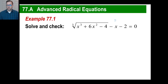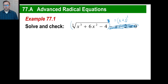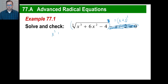Same thing — we're going to rewrite this. The term goes to the right side, so it turns into x plus 2. To get rid of the cube root, you're going to cube each side. The nice thing is the left side just gives you what's underneath the radical.